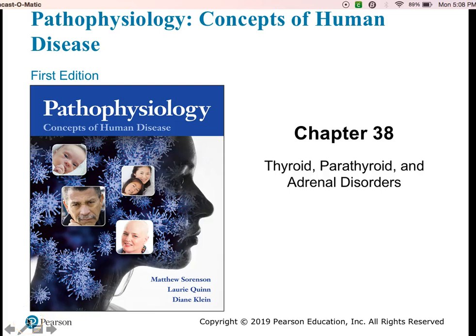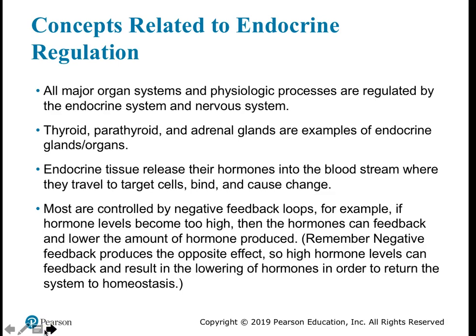Greetings, this is Chapter 38: Thyroid, Parathyroid, and Adrenal Disorders, presented by Professor Lombard. In this chapter we will be talking about certain endocrine organs. The nervous system is the fastest form of communication in the body, and the endocrine system is next as far as speed goes.